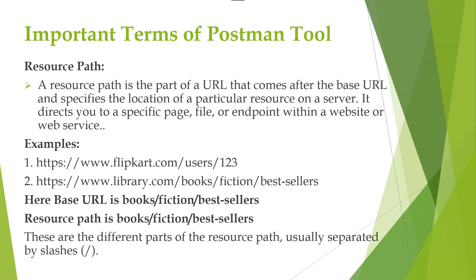For example, if you have the base URL as www.flipkart.com, then the resource path will be www.flipkart.com/users/123. Here, 123 is indicating the specific user with the ID of 123. The resource path will always follow the base URL.